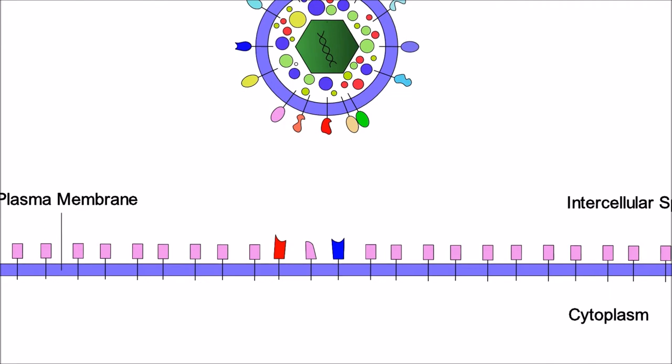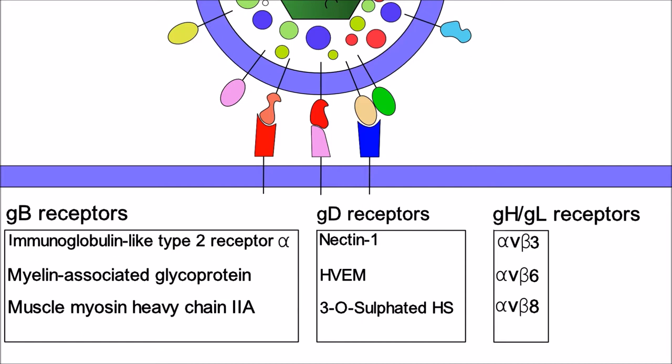The first part of viral replication is that the virus binds to receptors on the surface of the cell membrane. There are three main cell receptors that facilitate virus entry.